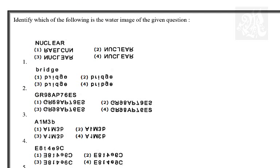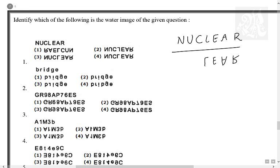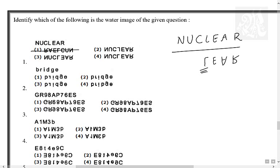For water image, the mirror is kept down — below. So 'nuclear': E will remain as it is because E is symmetrical; L will become inverted this way. Mirror is kept down — where do you see this? In the first option it doesn't seem that way. Three options are left — in the RAE case it will remain the same in all three. L is the focus; L should become this manner. Where do you see L? Third and fourth. Now look at U — U should actually get inverted. So the answer is four.